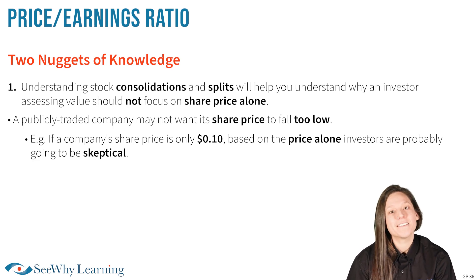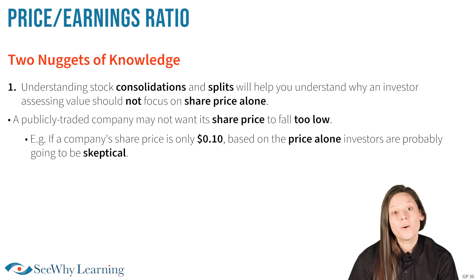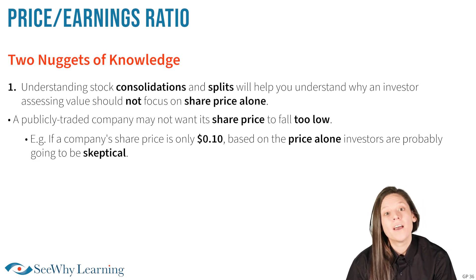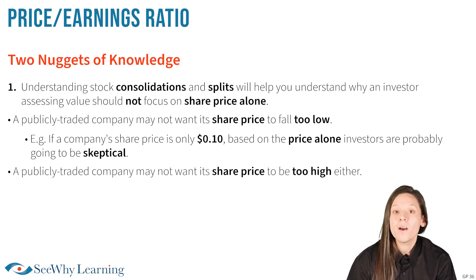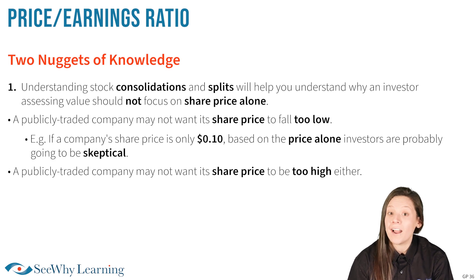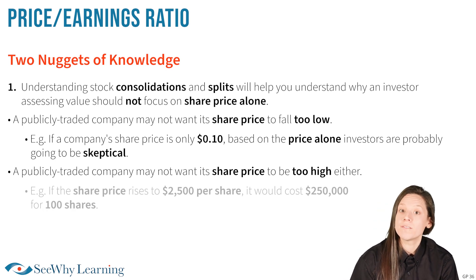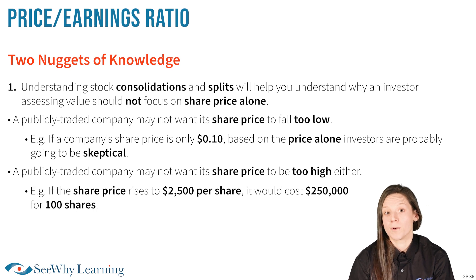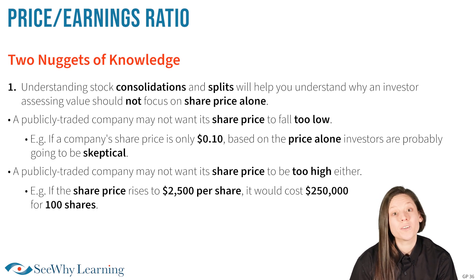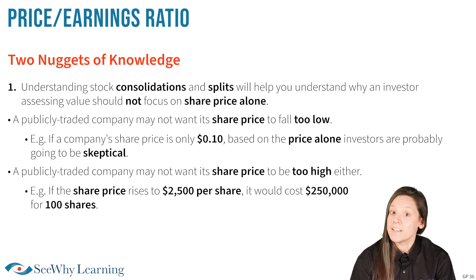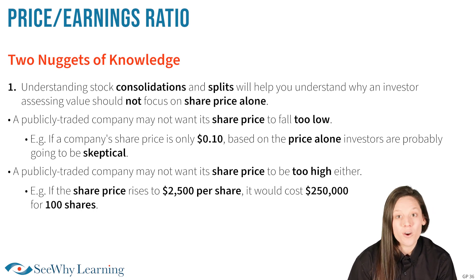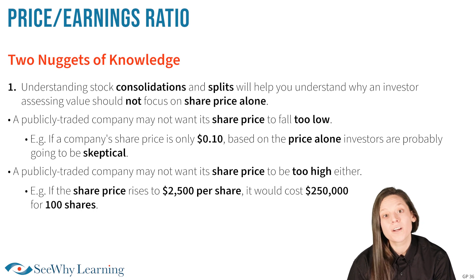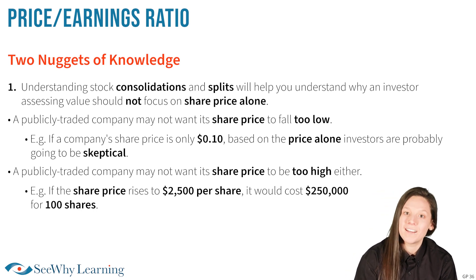On the other hand, since investors like to buy shares in quantities of 100, generally known as a standard trading unit, a publicly traded company may not want its share price to be too high either. For example, if the share price rises to $2,500 per share, it would cost $250,000 for a mere 100 shares. At this price level, you would need a very large portfolio to own enough different companies to remain diversified.